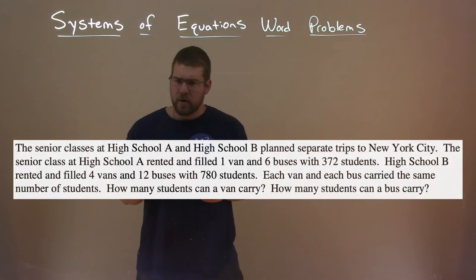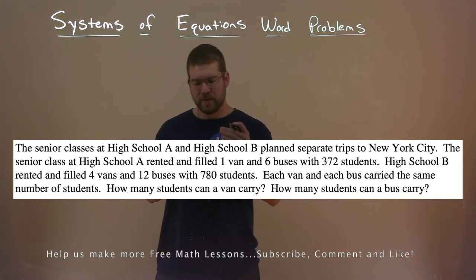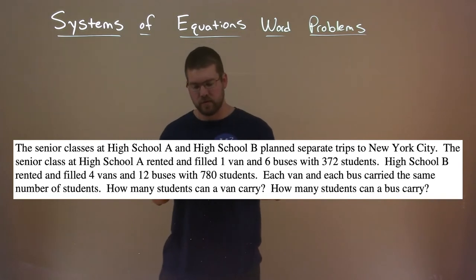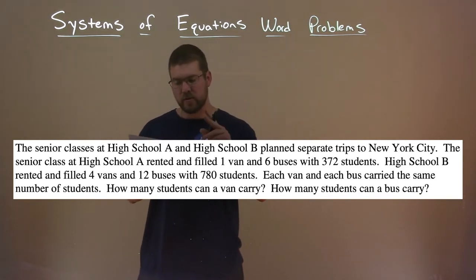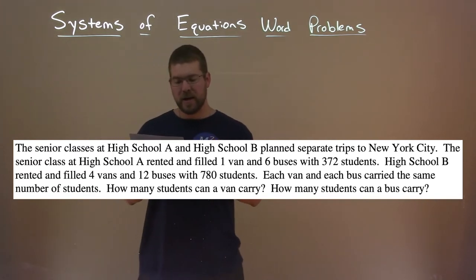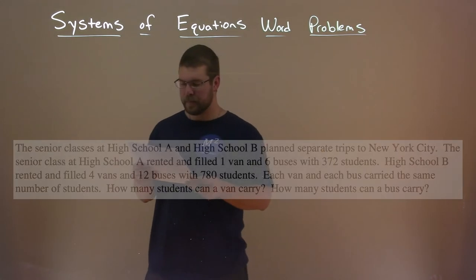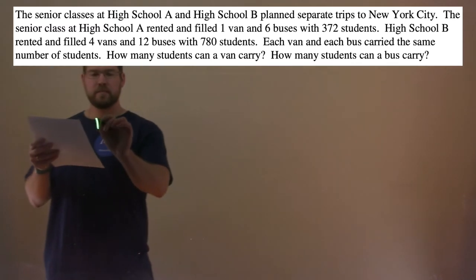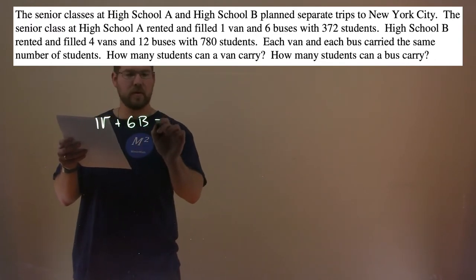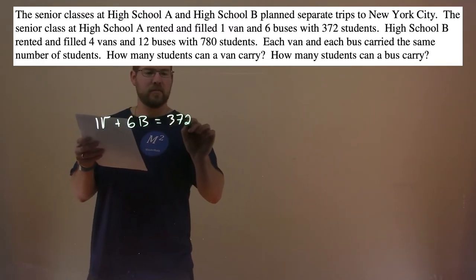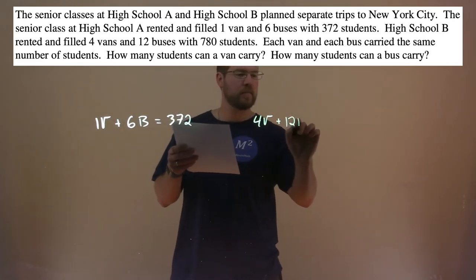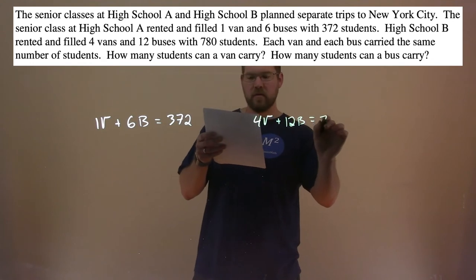We're given this problem: the senior classes at High School A and High School B planned separate trips to New York City. High School A rented and filled 1 van and 6 buses with 372 students. High School B rented and filled 4 vans and 12 buses with 780 students. Each van and bus carried the same number of students. How many students can a van carry? How many can a bus carry? First equation: V plus 6B equals 372. Second equation: 4V plus 12B equals 780.